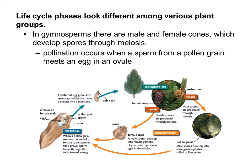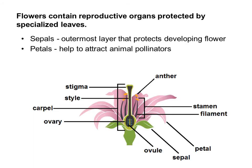Pollination occurs when sperm from a pollen grain meets an egg in an ovule, which is what we see in this diagram. Before we talk about reproduction in flowering plants, we need to go through the parts of the flower. The flower is the reproductive organ of a flowering plant, and all the parts are important.